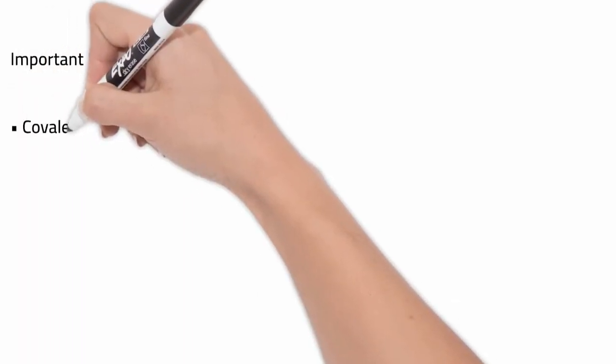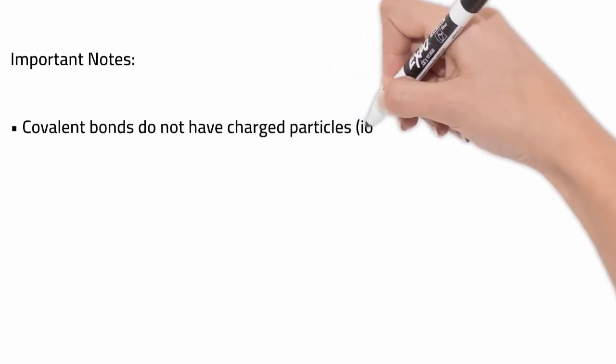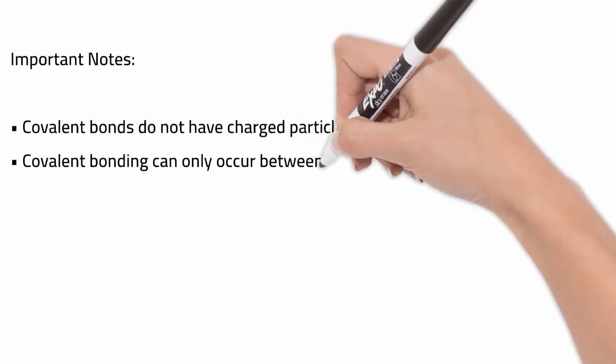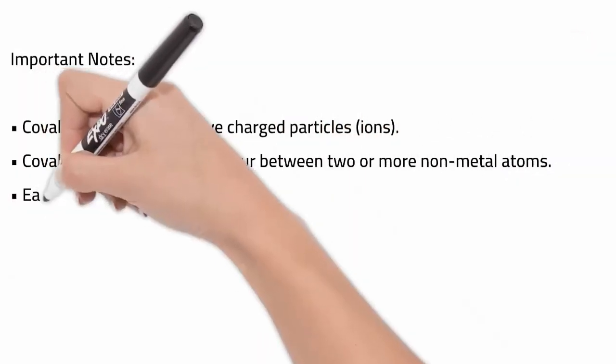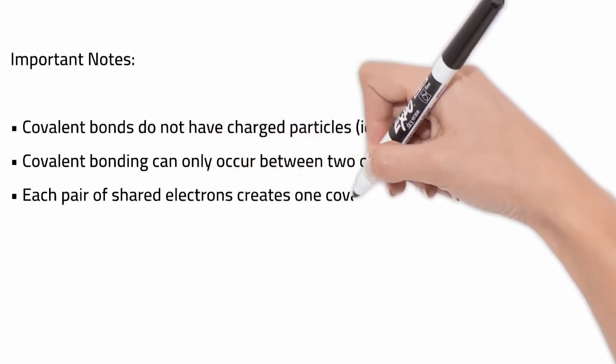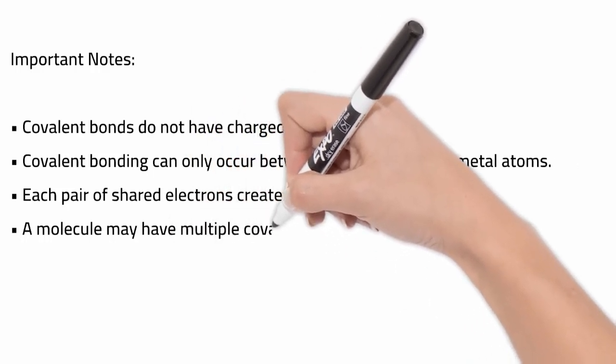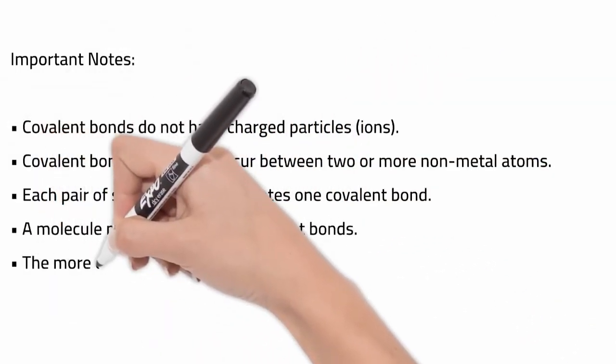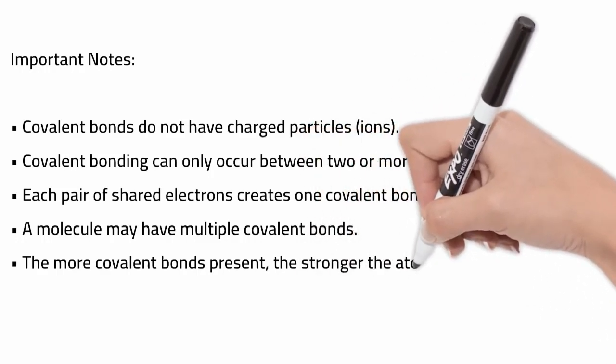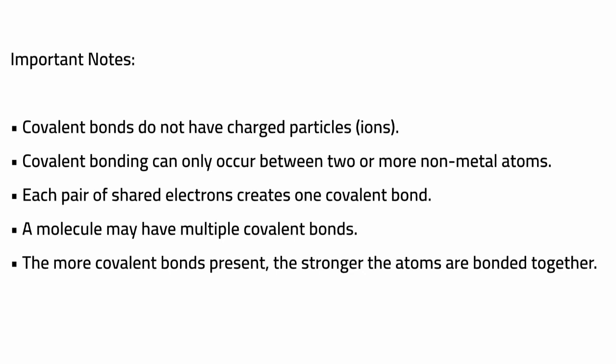To finish here are just some really important notes for you to keep in your head while you're considering covalent bonds. The first one is covalent bonds do not have charged particles or ions. Covalent bonding can only occur between two or more non-metal atoms. Each pair of electrons creates one covalent bond. A molecule may have multiple covalent bonds and the more covalent bonds are present the stronger the atoms are bonded together.